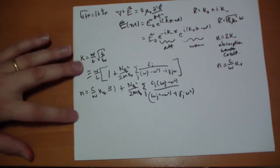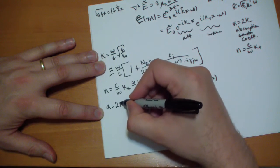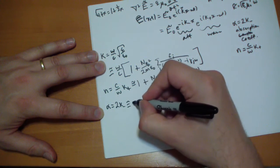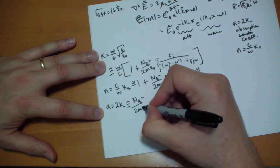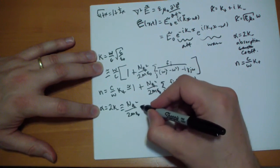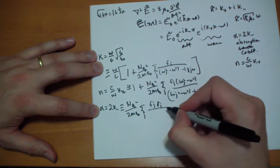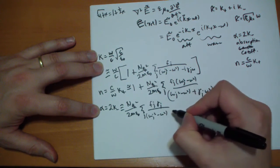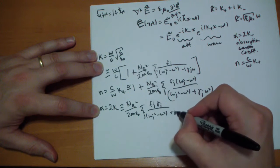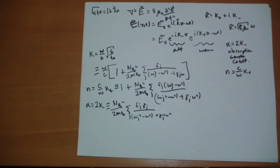Then our alpha, our absorption coefficient, becomes that's just two times kappa minus, which is about equal to n q squared over two m epsilon not times the sum j same thing, except for we have f j times gamma j at the top, divided by omega j squared minus omega squared plus gamma j squared omega squared. Once again, no imaginary number in there, so it's not complex.